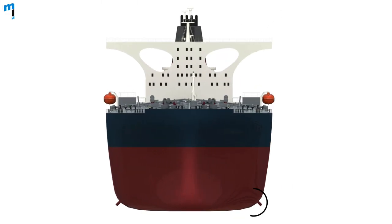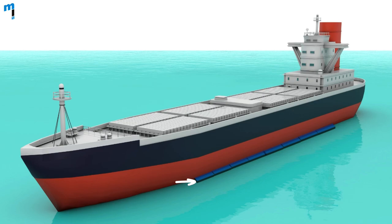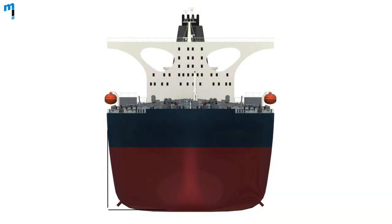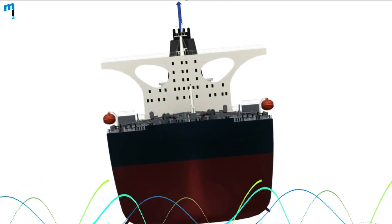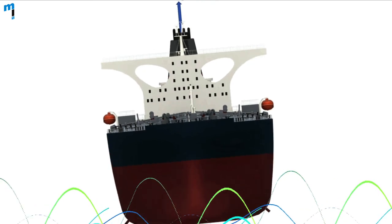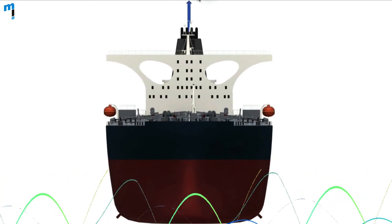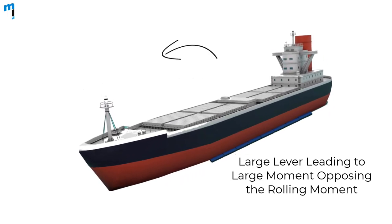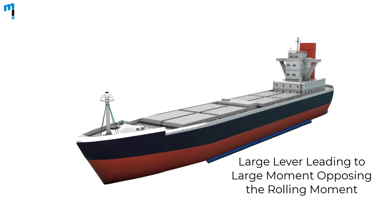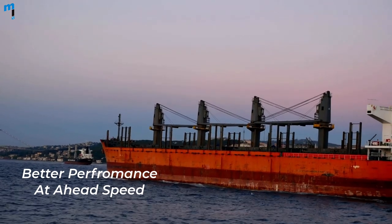Bilge keels are the most popular and are fitted to the great majority of ships. They are plates projecting from the turn of the bilge and extending over the middle half to two-thirds of the ship's length. To avoid damage, they do not normally protrude beyond the ship's side or keel lines, but they need to penetrate the boundary layer around the hull. They cause a body of water to move with the ship and create turbulence, dampening the motion and causing an increase in period and reduction in amplitude. Although relatively small in dimension, they have large levers above the rolling axis, and the forces on them produce a large moment opposing the rolling. Their effect is generally enhanced by ahead speed.